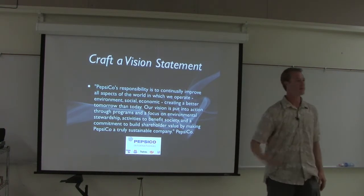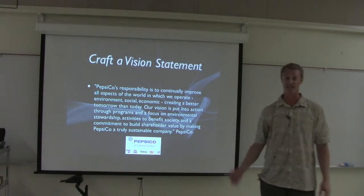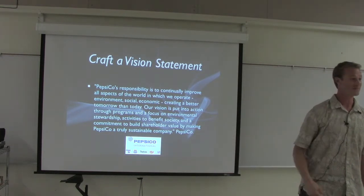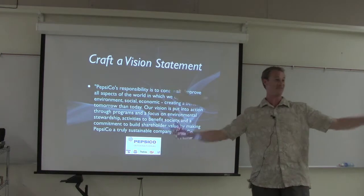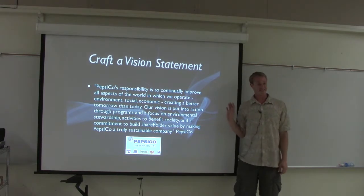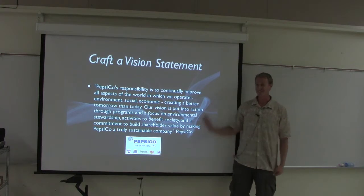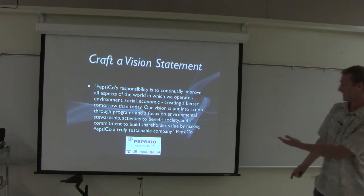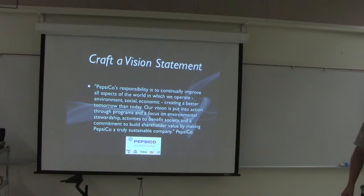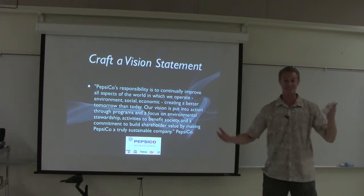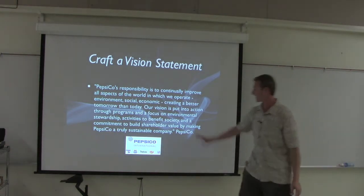The shareholder value line had to be in there because the focus of their company is ultimately to make money. If they don't include that, investors who only care about profit won't invest. With this vision statement, they hit two audiences — the socially and environmentally conscious people and the profit-focused people — all in one. And they do follow through: they run social programs, send kids to college, do economic programs, and yes, they also make money for shareholders.